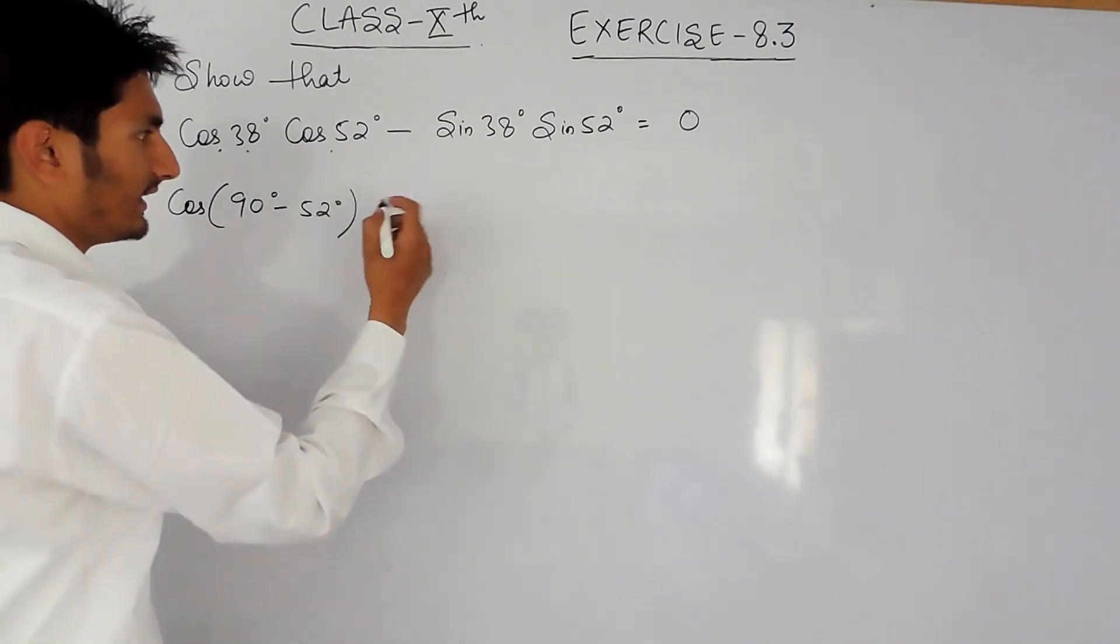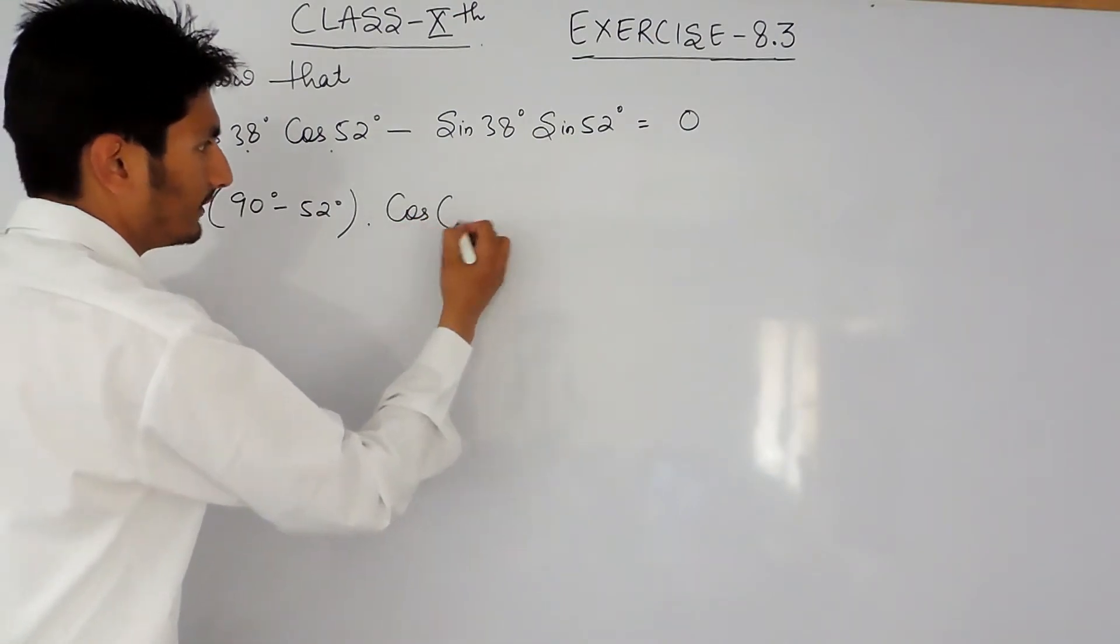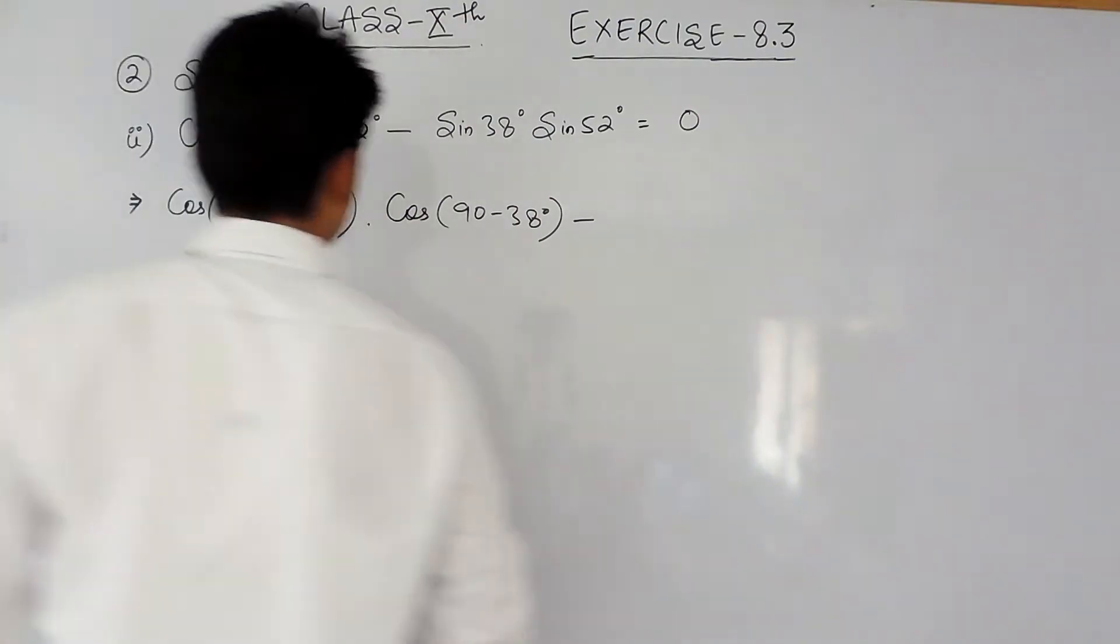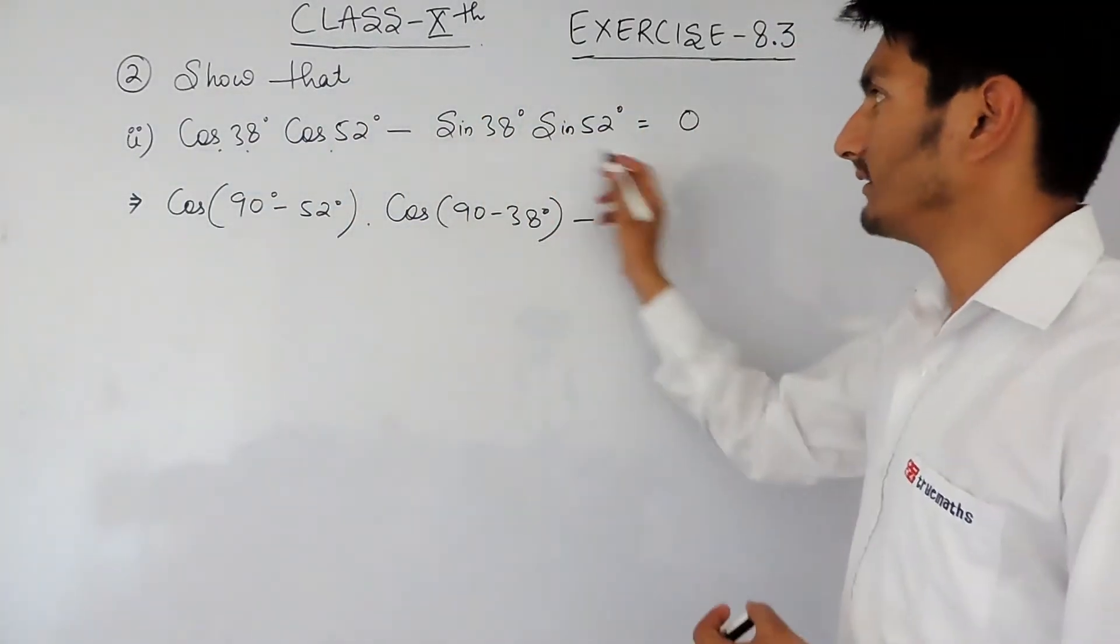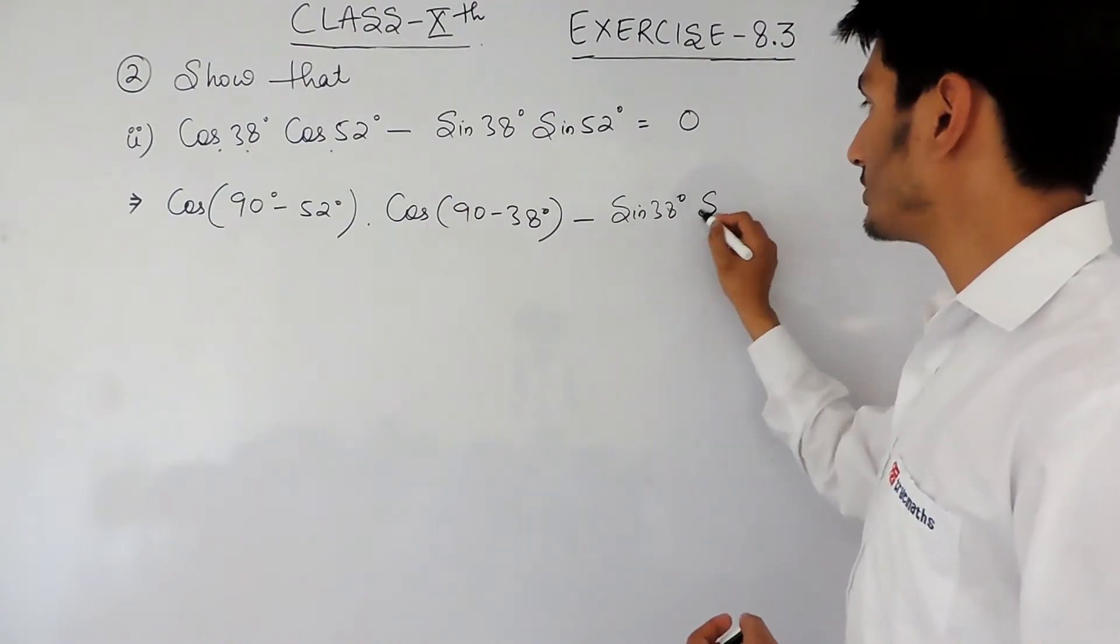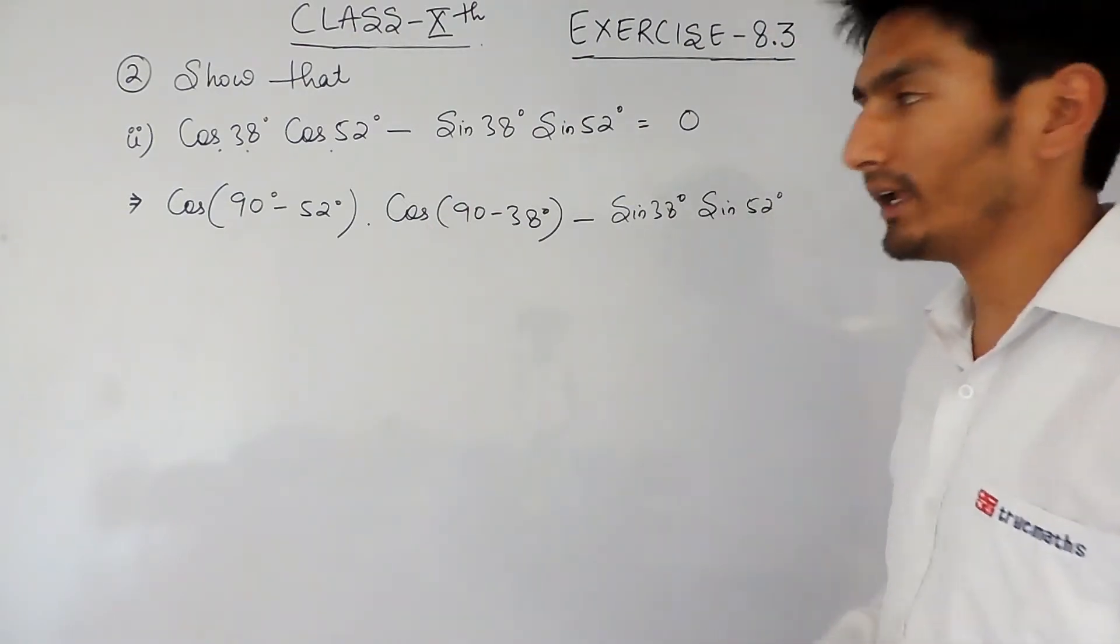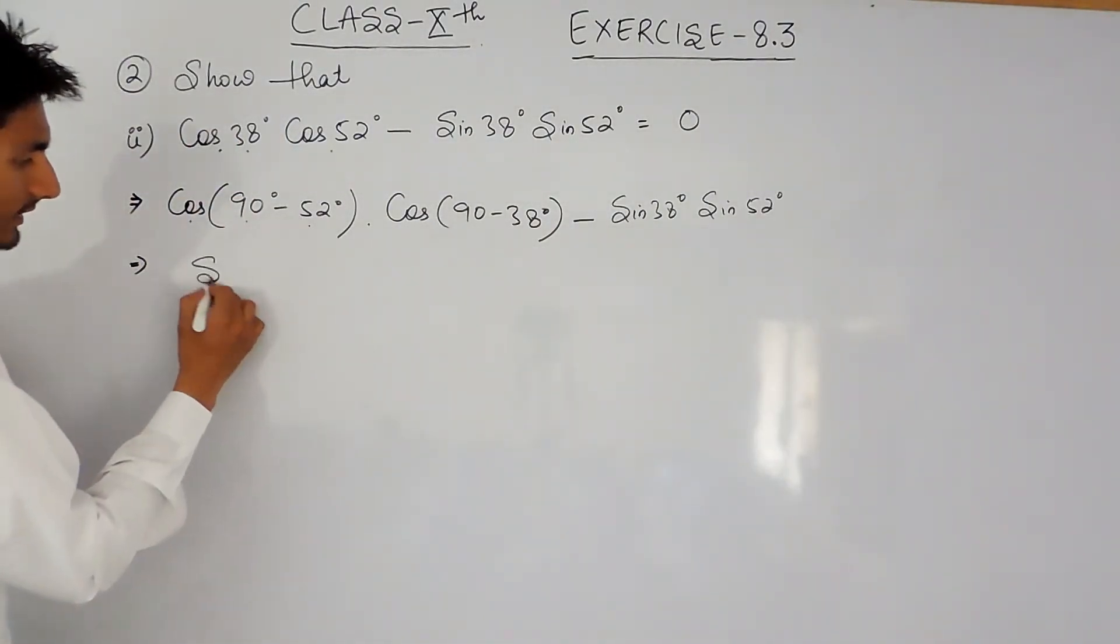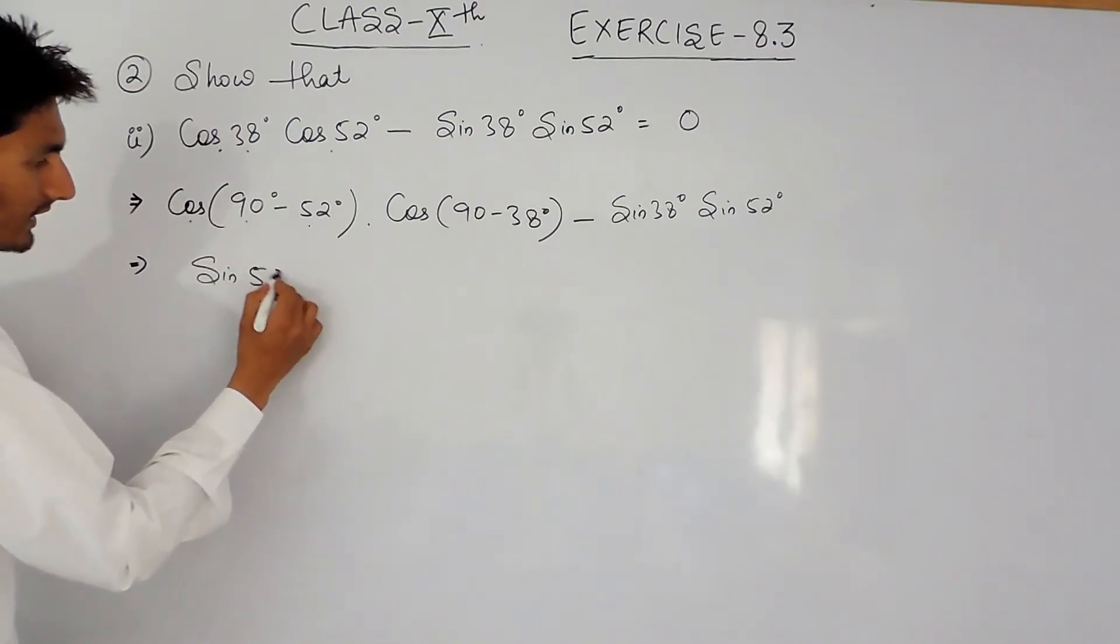We know that the complement of 52 is again 38, so cos 52 can be written as 90 minus 38. Don't change these two values. Now when you solve this, cos 90 minus theta will be converted into sine theta.